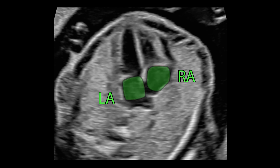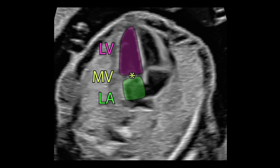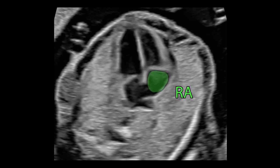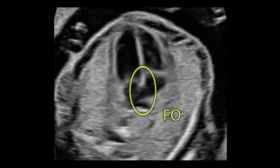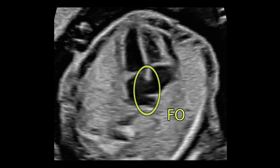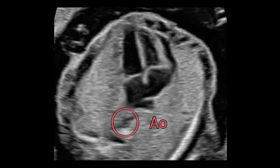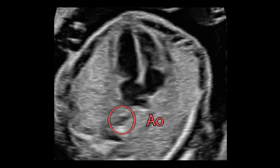Both atria are nearly equal in size. The left atrium is angular in shape, and the pulmonary veins are connected to it. The left atrium is connected to the left ventricle by the mitral valve. The right atrium has a more circular shape and connects via the tricuspid valve to the right ventricle. We can recognize the foramen ovale and its leaflet, the flap valve. The aorta is seen behind the left atrium in front of the spine.